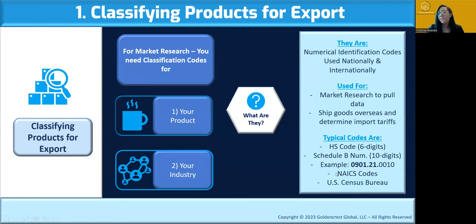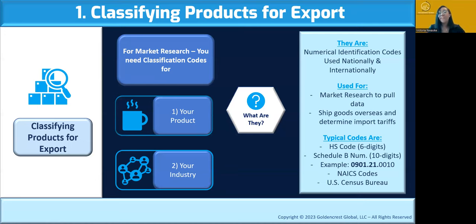The next type of code is the NAICS code, which classifies your whole industry — for example, hot beverages — rather than a specific product. When using market research tools, some will ask for your HS code for product-level data, your Schedule B number for very specific data like organic versus non-organic coffee, or your NAICS code for broad industry-level information. Both HS/Schedule B and NAICS codes can be found through the U.S. Census Bureau, which collects all this information.